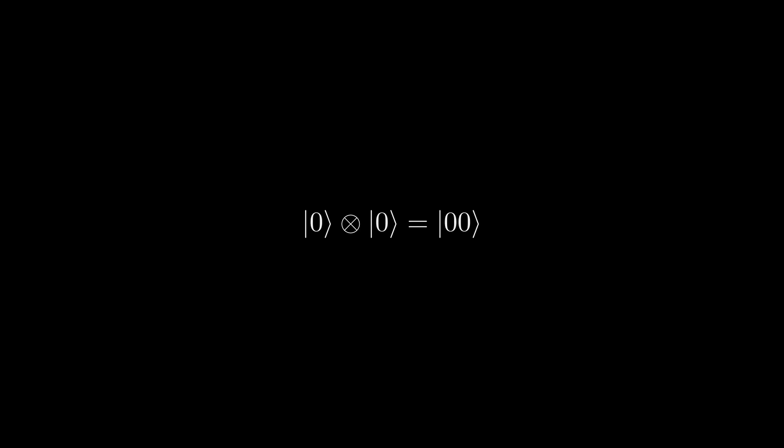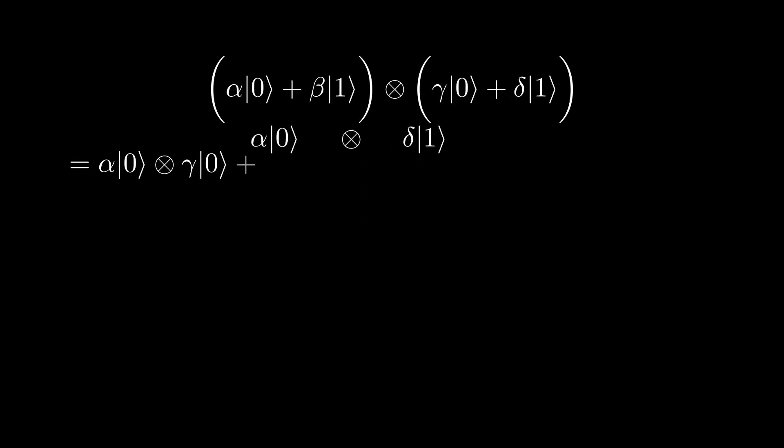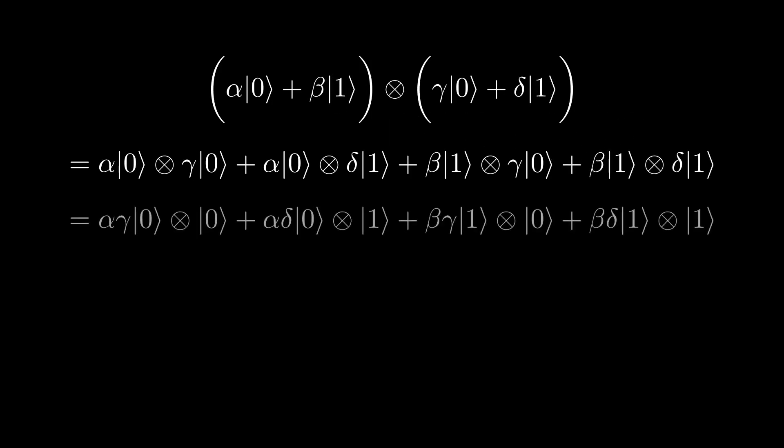If we wanted to represent two qubits in superposition, we can expand it out like any other operation by multiplying the amplitudes of the states and using the tensor product on the zero and one states.